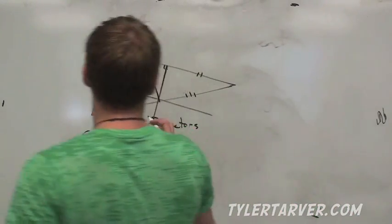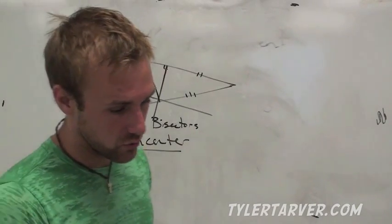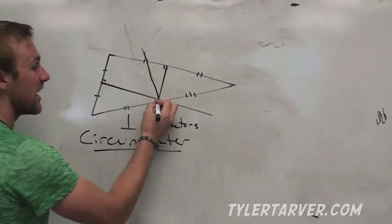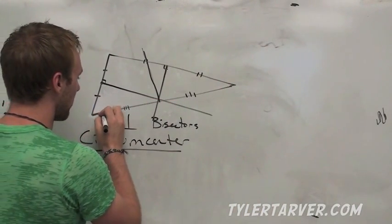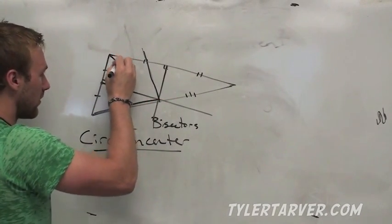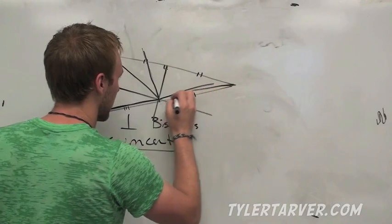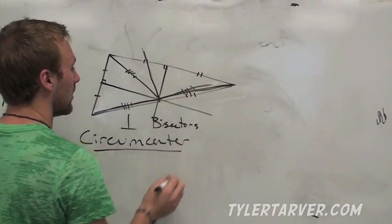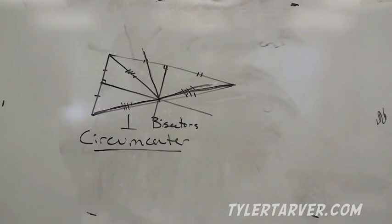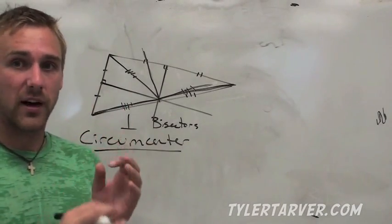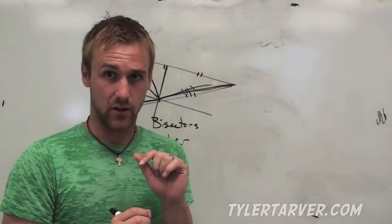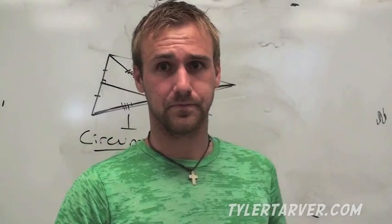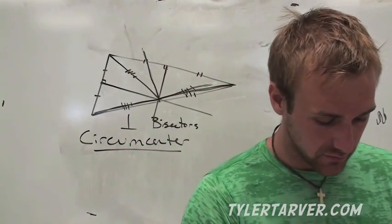This circumcenter right here, it is the exact same distance to all the vertices, like this line, this line, and this line. Those are all the exact same distance. I know there's a lot of stuff going on here, but what you need to know is if you have a triangle, you do the perpendicular bisectors, they all cross at one point. That's called the circumcenter. That circumcenter is the same distance to all the vertices, to all the angles.